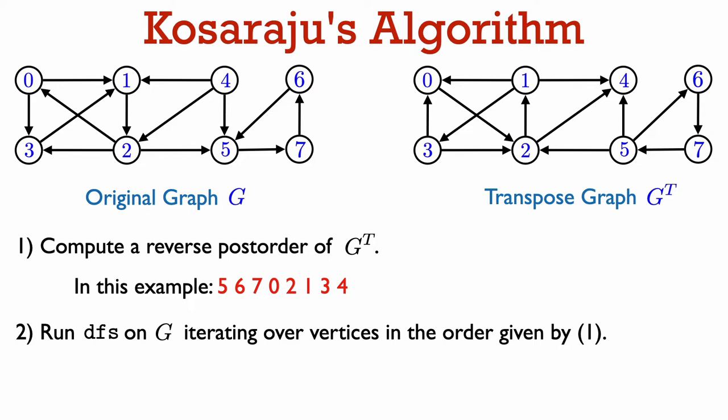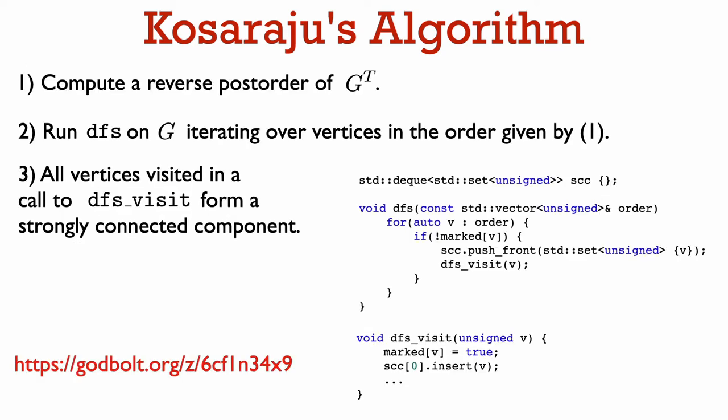The first step in Kosaraju's algorithm is to use depth-first search on G-transpose to compute a reverse post-order. After that, we do a depth-first search on G, starting with the first vertex in the reverse post-order obtained from G-transpose. In this example, a reverse post-order of G-transpose turns out to be 5, 6, 7, 0, 2, 1, 3, 4. So in step two, we would start depth-first search on G with vertex 5. After we visit everything reachable from vertex 5, we look for the next unmarked vertex according to the reverse post-order of G-transpose, then start depth-first search on that vertex, and keep going in this way.